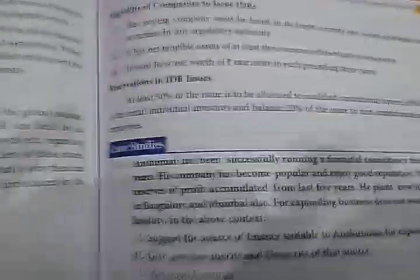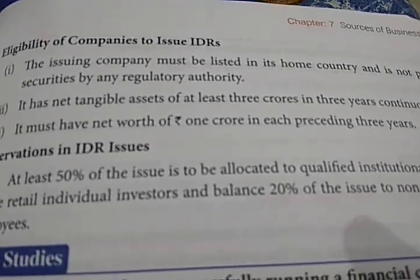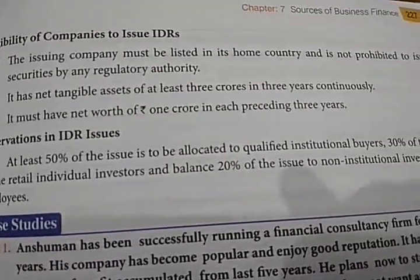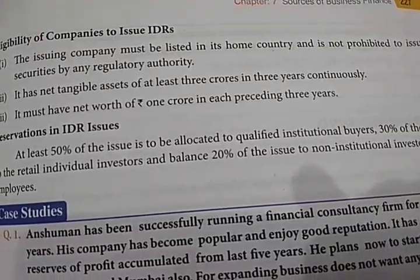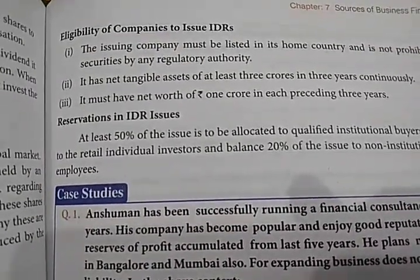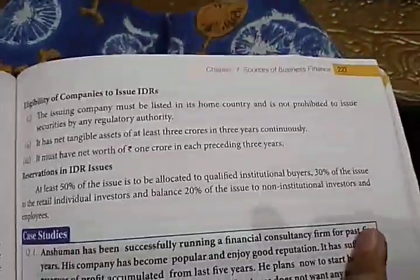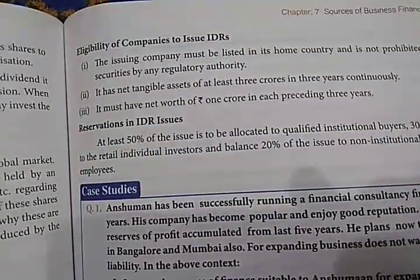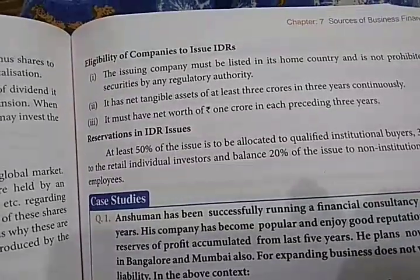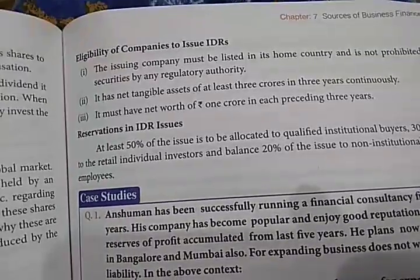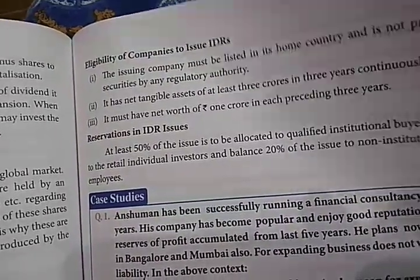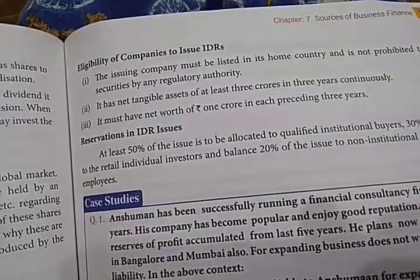Eligibility of companies to issue IDR: The issuing company must be listed in its home country. It must not be prohibited from issuing securities by any regulatory authority. The company must have a net tangible asset of at least 3 crores in the preceding 3 years, and a net worth of more than Rs. 1 crore in each of the preceding 3 years.